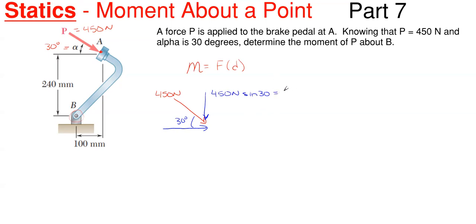So this gives us 225 newtons of force in the downward direction, and then the X one will be 450 newtons, and this time it will be cosine of 30 degrees.